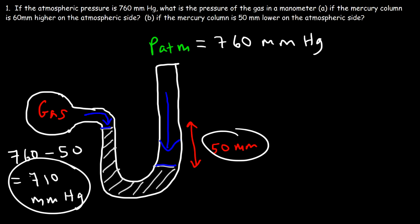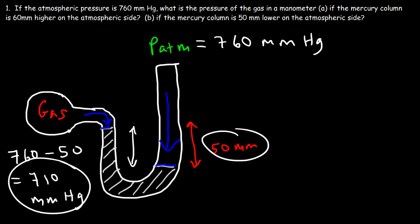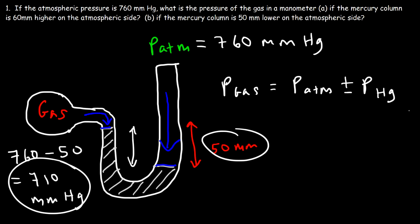That's how you use a manometer to measure the pressure of a gas. You need to know the atmospheric pressure, and then based on the height difference you can calculate the gas pressure by either adding or subtracting. The formula is: pressure of the gas equals pressure of the atmosphere plus or minus the pressure of the mercury column (P_Hg) — add or subtract based on whether the gas pressure is stronger or weaker than atmospheric pressure.